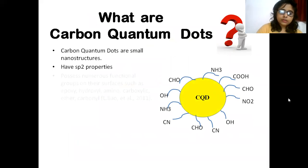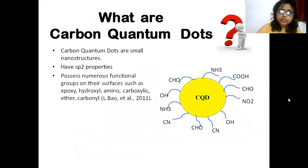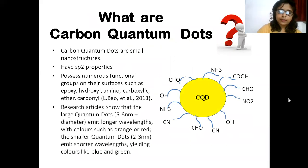Large Carbon Quantum Dots appear red or orange in color, whereas small Carbon Quantum Dots appear blue and green in color.